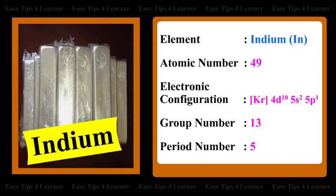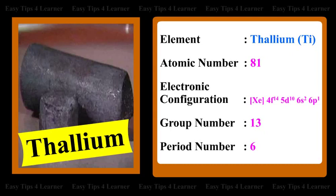For indium, the electronic configuration is [Kr] 4d¹⁰ 5s² 5p¹, the group number is 13, and the period number is 5. For thallium, the electronic configuration is [Xe] 4f¹⁴ 5d¹⁰ 6s² 6p¹, the group number is 13, and the period number is 6.